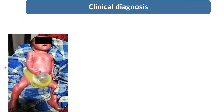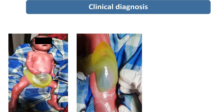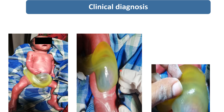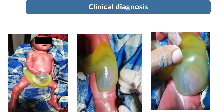This is the image of a newborn who was delivered in our institute. You can see this newborn is having a large abdominal mass at the base of the umbilical cord. This mass is covered with a membranous sac, and the content of this mass is intestine and liver.